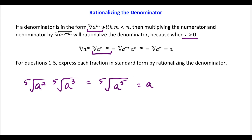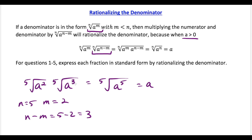Using the formula, n is equal to 5, m is equal to 2, and the new power to multiply by — n minus m — would be 5 minus 2, which equals 3. That's why we multiply by the cube root expression, which gets the radical to disappear, giving us just a.